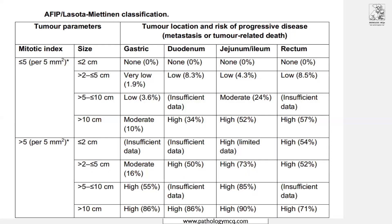AFIP grading is based on three things: site, size, and mitotic index. The mitotic index is classified as ≤5 or >5 per 5 mm². Size categories are: less than 2 cm, 2–5 cm, 5–10 cm, and more than 10 cm. For example, if the question states the tumor is 16 cm, you are bound to apply AFIP grading accordingly — count the mitoses and assign the grade.